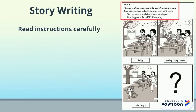Part 4. You are writing a story about John's picnic with his parents. Look at the pictures and write the story in about 30 words. You may use the words in the boxes to help you. What happens in the end? Finish the story.